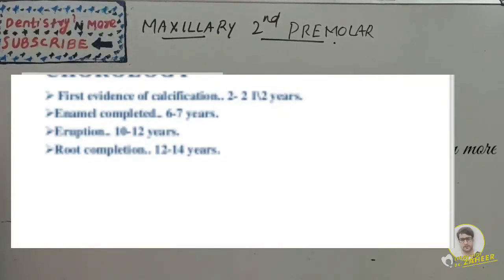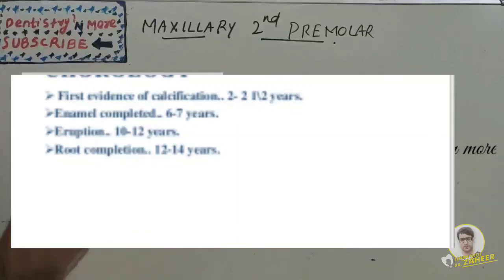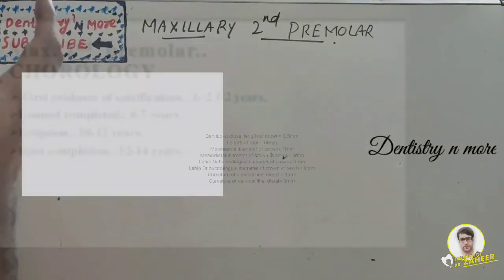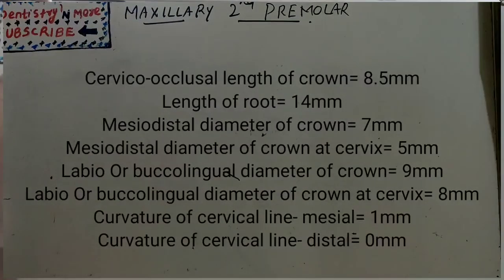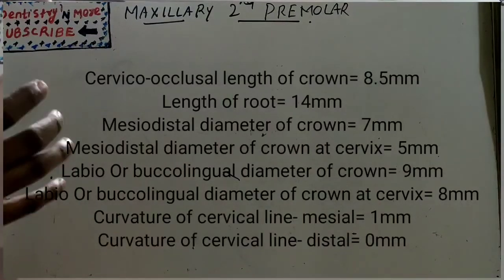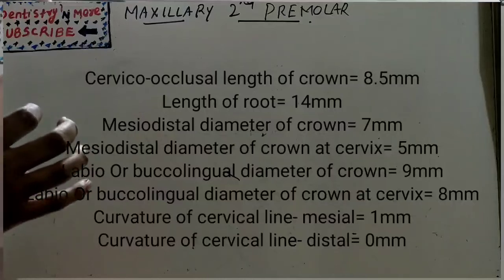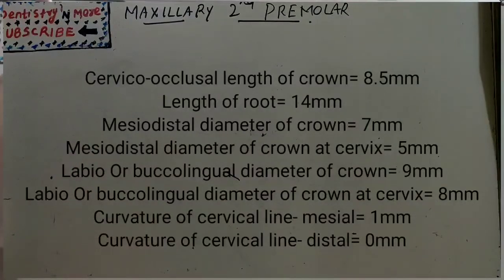Enamel is completed at around 6 to 7 years, eruption by 10 to 12 years, and root completion by 12 to 14 years. The dimensions of the tooth: crown length is 8.5 mm, root length is 14 mm, mesiodistal diameter of crown is 7 mm and 5 mm at the cervix, buccolingual diameter is 9 mm and 8 mm at the cervix, mesial curvature line is 1 mm and distal is 0.